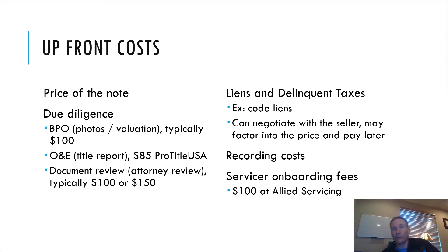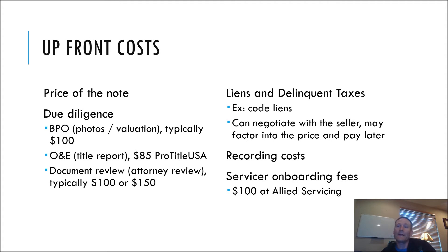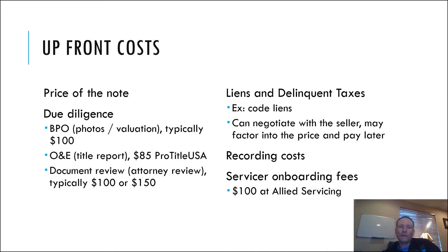There could be code liens or delinquent taxes that need to be taken care of. If it's a performing note that really shouldn't be the case, but sometimes it is. Generally if there are these kinds of expenses, I'm usually negotiating that with the seller upfront. After you complete the purchase, you're going to have docs that you have to record — a quitclaim deed and probably an assignment if it's a contract for deed, or an assignment of mortgage otherwise. Your loan servicer often has onboarding fees; I've been sending a lot to Ally lately and they have a $100 upfront fee when you board the loan.